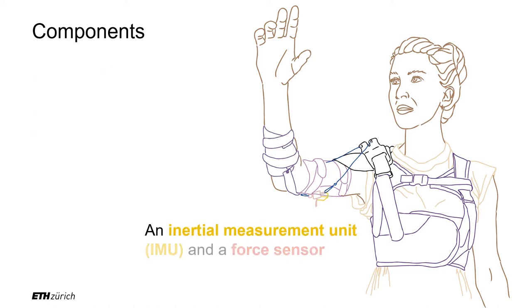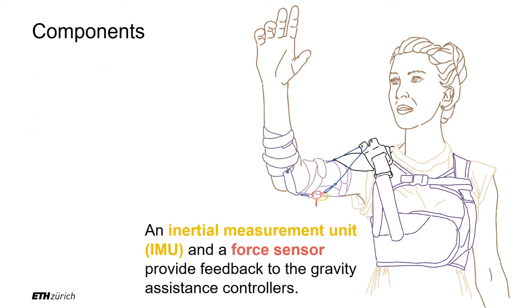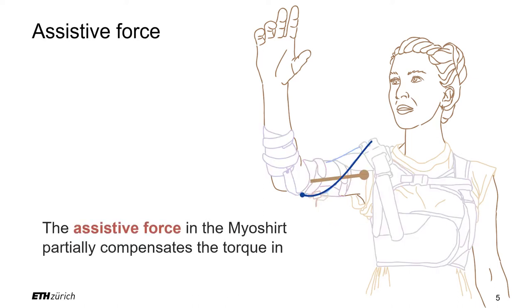An inertial measurement unit and a force sensor provide feedback to the gravity assistance controllers. The assistive force in the Myoshirt partially compensates the torque in the shoulder induced by gravity.